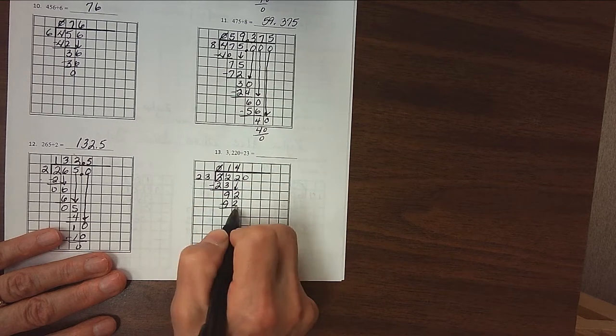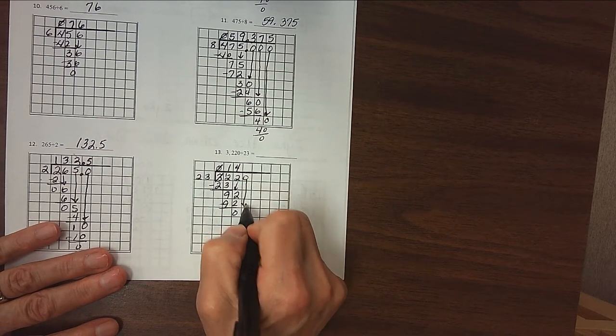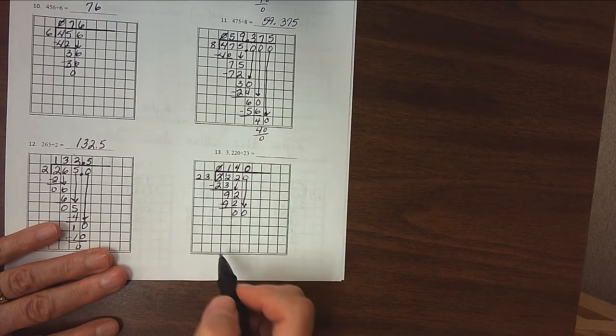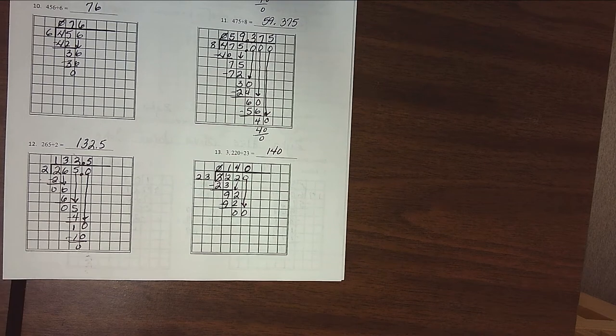23 divides into 92 exactly 4 times. Now, be careful here. We subtract and we're tempted to think that we're done. But remember, you've got to bring this 0 down. And 23 divides into 0 zero times because 0 times 23 is 0. So it's 140, not 14. Be careful on that one. All right, that's page 2 of your video notes. Tune into the next video for page 3.